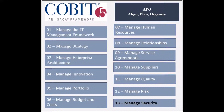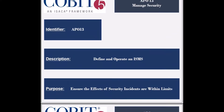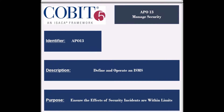The thirteenth process of the Align Plan and Organize Domain is called Manage Security. The identifier of the process is APO13. The process defines, operates, and monitors an information security management system. The purpose of this process is to maintain the information security incidents within tolerable levels.